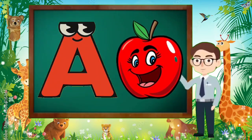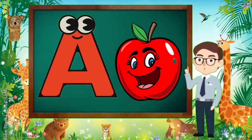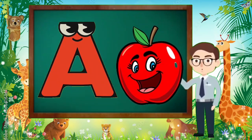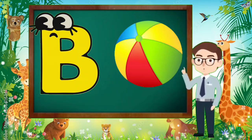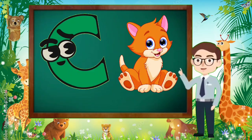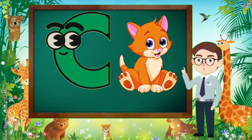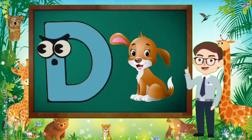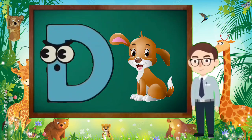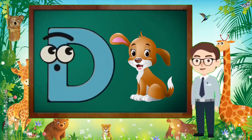A is for Apple, A-A-Apple. B is for Ball, B-B-Ball. C is for Cat, C-C-Cat. D is for Doll, D-D-Doll.